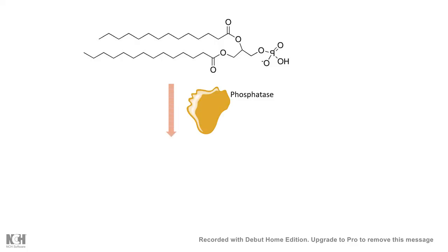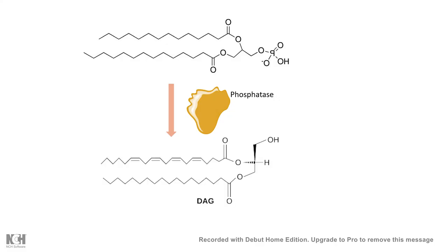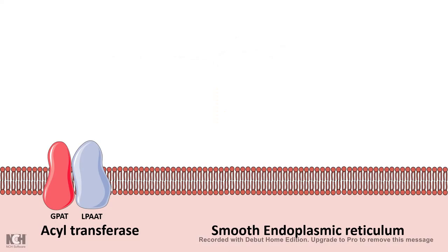Ultimately, the phosphate group of phosphatidic acid is cleaved off by a phosphatase, also present in the smooth ER membrane, and diacylglycerol is formed — an alcohol with two long fatty acid chains embedded in the membrane. On top of diacylglycerol, a polar head group can then be added.